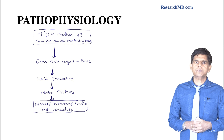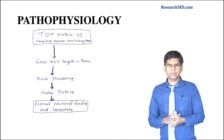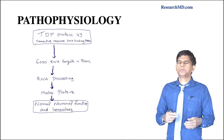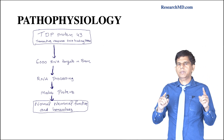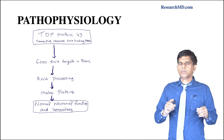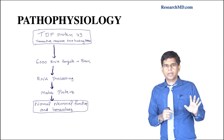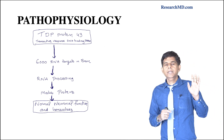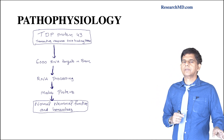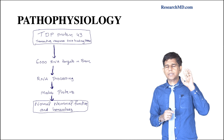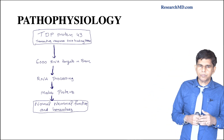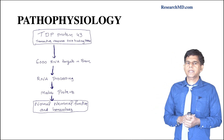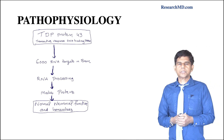When talking about pathophysiology, the key thing to know is the TDP-43 protein — the transactive response DNA binding protein. TDP-43 has around 6,000 RNA targets in the brain, and it is involved in RNA processing and protein synthesis. It plays a very important role in normal neuronal function and neuronal homeostasis.